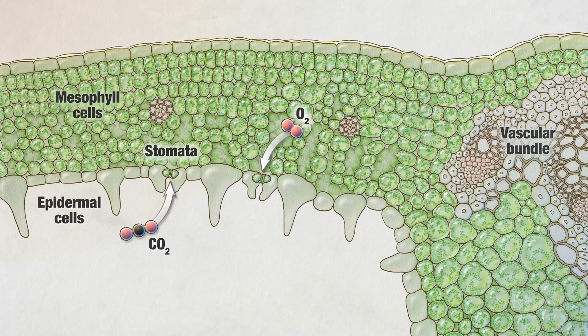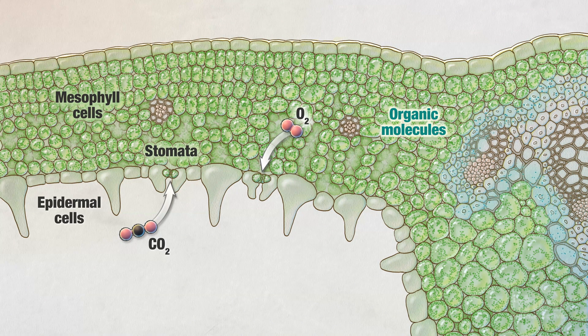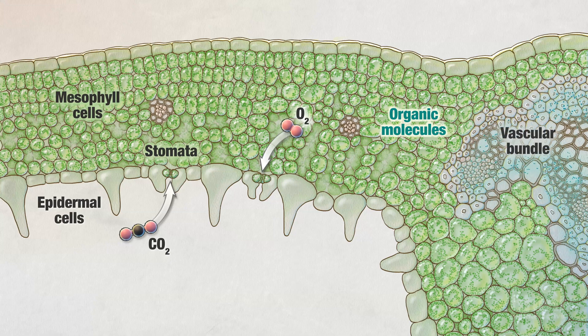The plant transports organic molecules produced in its leaf cells to other cells via the plumbing system found in vascular bundles.